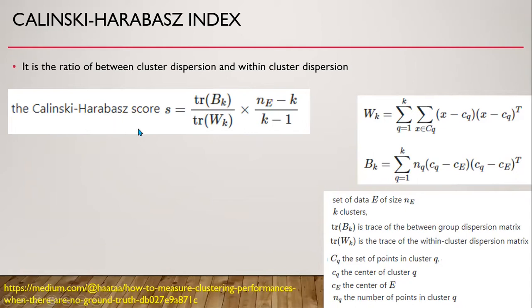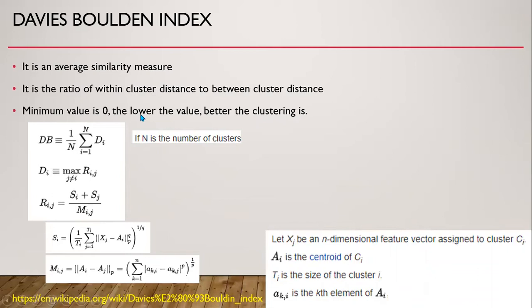The Davies-Bouldin index is an average similarity measure — specifically the ratio of within-cluster distance to between-cluster distance. Its minimum value is zero, and the lower the value, the better the clustering. Here, this is the between-cluster distance, these are the centroids, and this is the within-cluster distance — the distance between a centroid and a particular point. The R_ij is defined as (S_i + S_j) divided by M_ij, and this gives the Davies-Bouldin index.